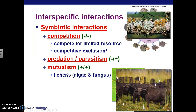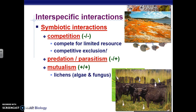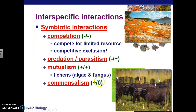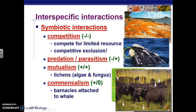Lichens almost look like one organism — the fungus and algae are nearly embedded together. The orange part is the fungus and the whitish-green part is the algae. The last relationship is commensalism, where one organism benefits and the other is not harmed. The classic example is barnacles and whales: barnacles live on the whale and get protection and transportation, while the whale is not harmed and doesn't get any benefit from the barnacles living on it.